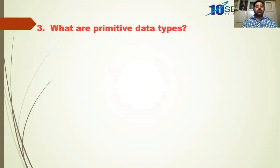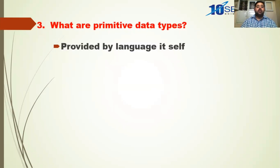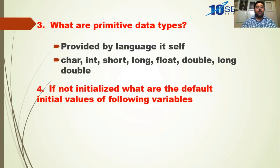Third question: what are primitive data types? Primitive data types means the basic data types provided by the language. In C language we have: char, int, short, long, float, double, and long double — these are the basic primitive data types provided by the language.